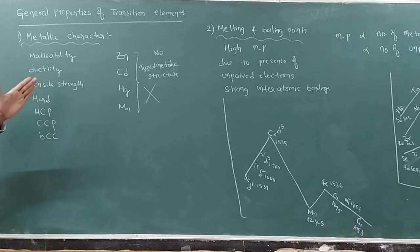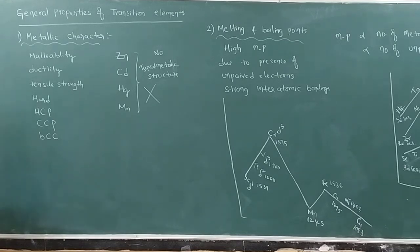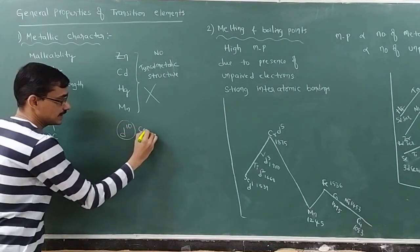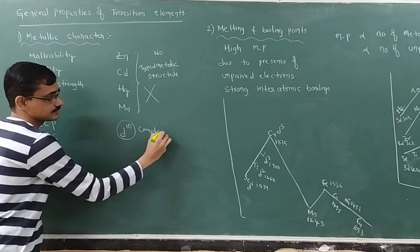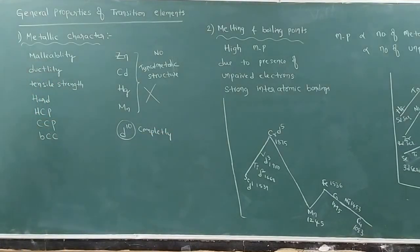First, we see the metallic character. Metallic character means the losing tendency of electrons. When you have completely filled electrons, such as d10, it is difficult to remove electrons.